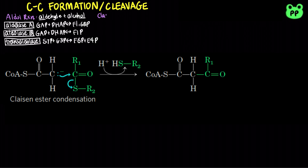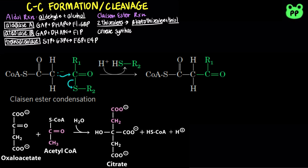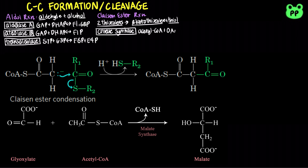In the Claisen ester reaction, the carbanion is stabilized by the carbonyl of an adjacent thioester. For example, in the citric acid cycle, oxaloacetate and acetyl-CoA combine to form citrate. In the glyoxylate cycle, acetyl-CoA and glyoxylate combine to form malate in a similar fashion.